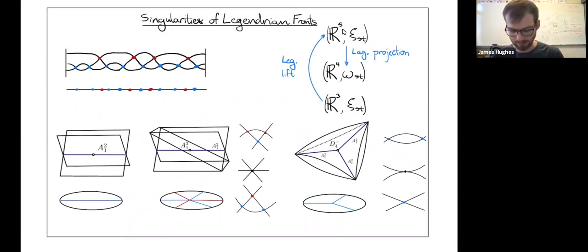We're going to be looking at fronts in contact R3, lifting those into contact R5, and then projecting down into symplectic R4 to get exact Lagrangian fillings.